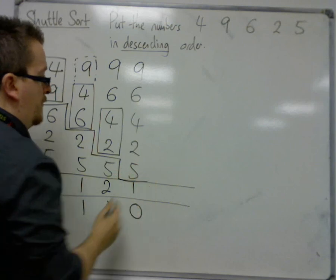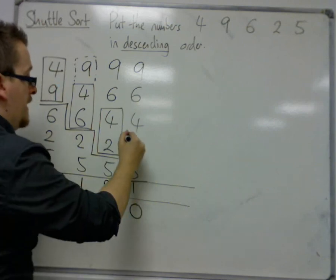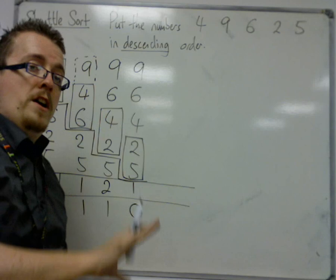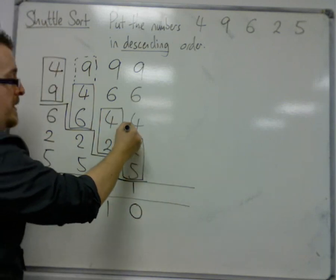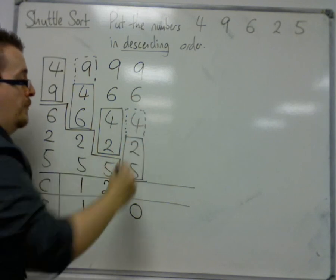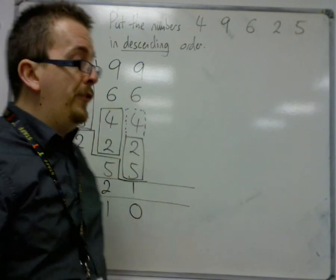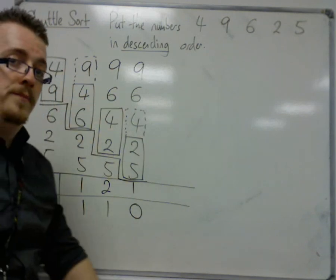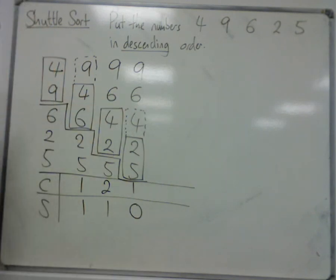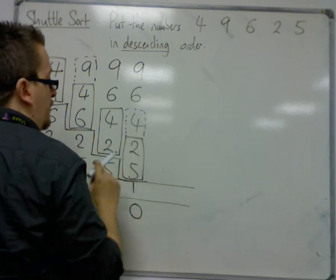I drop down a level, the final level, to consider 2 and 5. Well, 5 is larger than 2, so this causes a swap. I need to compare the 5 with the 4, because possibly the numbers will be 9, 6, 4, 5, 2, which isn't quite right. So I need to make that comparison with the 4.